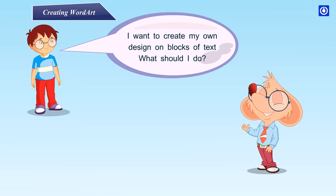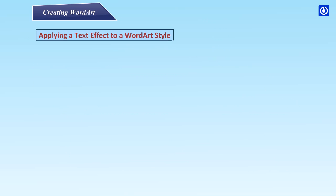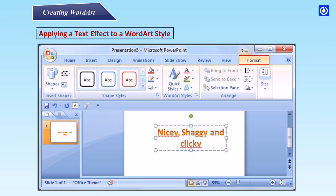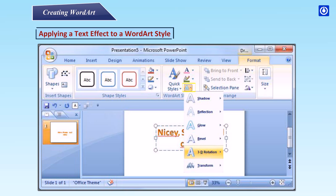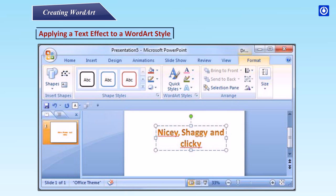I want to create my own design on blocks of text. What should I do? You may choose to create your own design by using the Word Art style. Applying a text effect to a Word Art style. Step 1: Select the text you wish to modify; the format tab will appear. Step 2: Click the Text Effects command. A drop-down menu of options will appear. Step 3: Select an option. The options are shadow, reflection, glow, bevel, 3D rotation, and transform — these will display a sub-menu. Step 4: Click an option in the sub-menu to apply effects on Word Art.